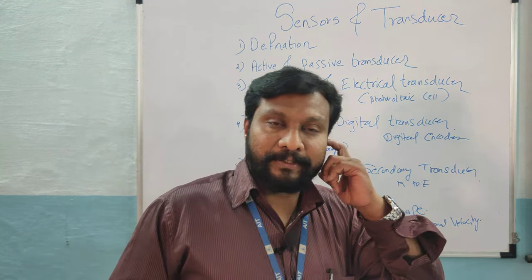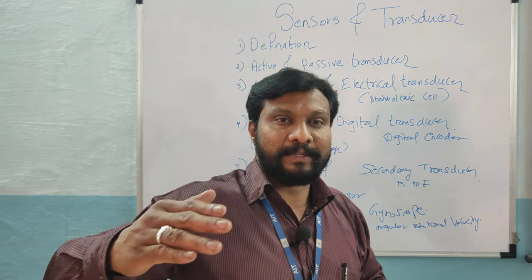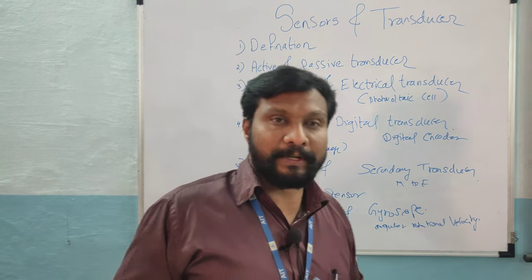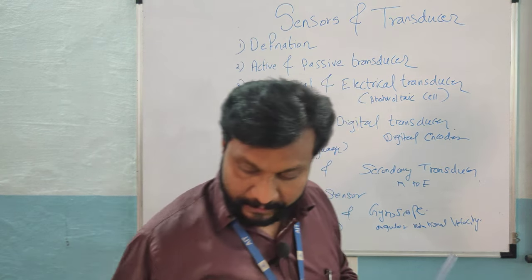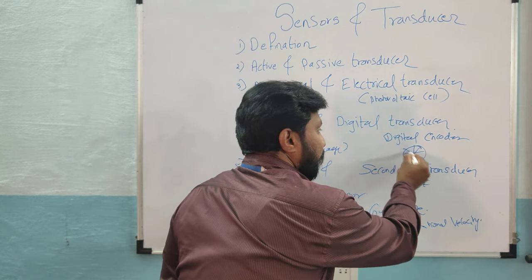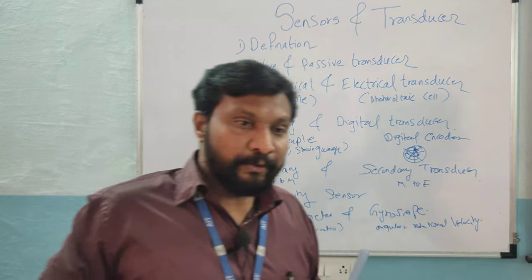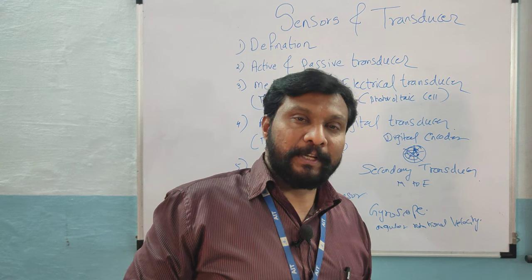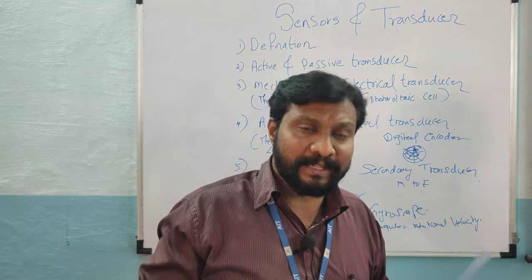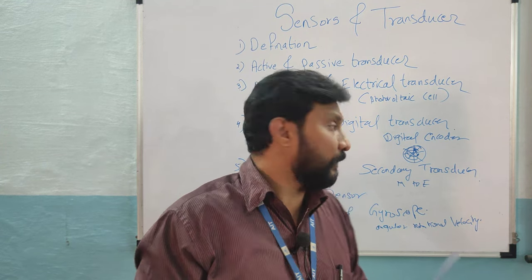A digital transducer converts the measured physical parameter into a digital output. A common example is the digital encoder, where a circle is divided into transparent and opaque parts. Depending on these transparent and opaque sections, a pattern of 1s and 0s — binary form — is generated, which is the digital output.